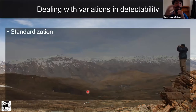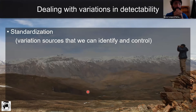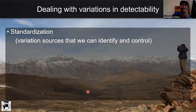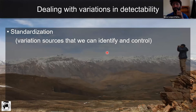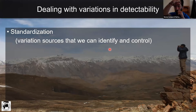Dealing with variation in detectability: one approach is to standardize. We can think about the variation sources that cause variation in detection, identify them, and control them. For example, if we know mountain ungulates are more active during the early hours of morning and less active during the middle hours, we should ensure all surveys are done at similar times — in the morning rather than different times. Another variation source we can identify is observer experience. Training for observers is extremely critical — that's a variation source we can potentially identify and control for.